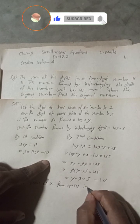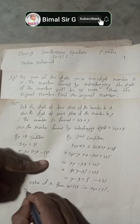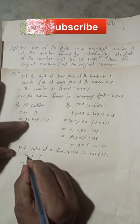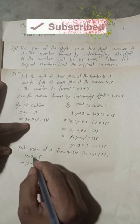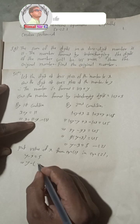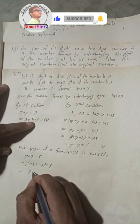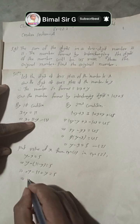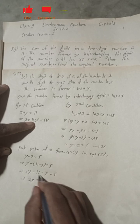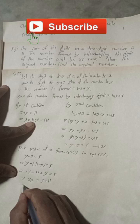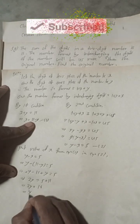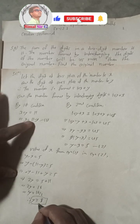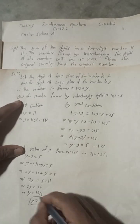Now put the value of x from Equation 1 into Equation 2. We have y minus x equals 5, so substituting x equals 11 minus y: y minus (11 minus y) equals 5. This gives y minus 11 plus y equals 5, so 2y equals 5 plus 11 equals 16. Therefore y equals 16 divided by 2, which gives y equals 8.